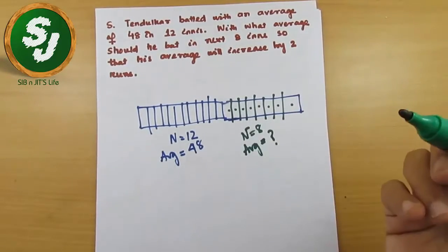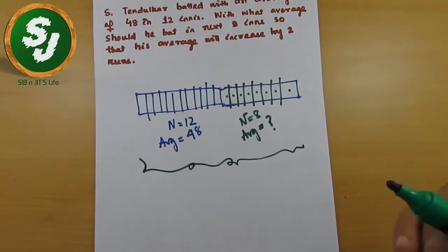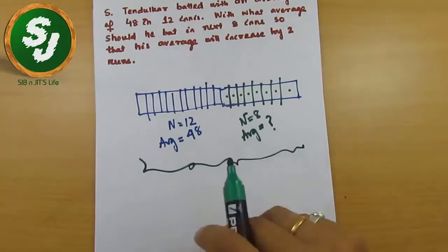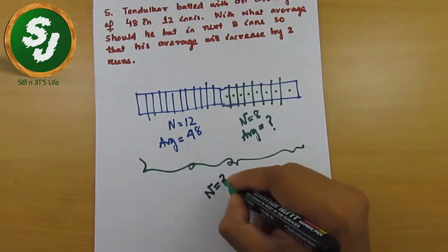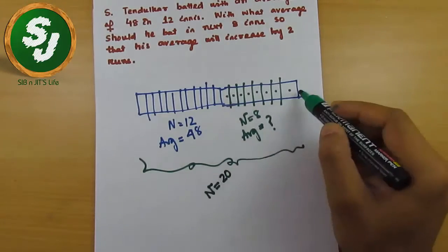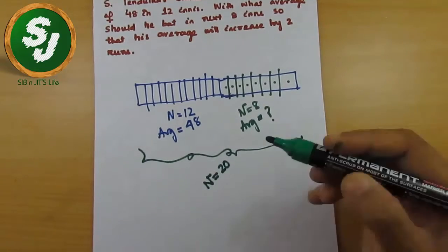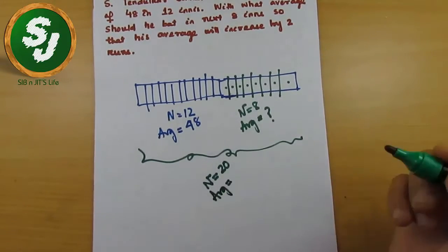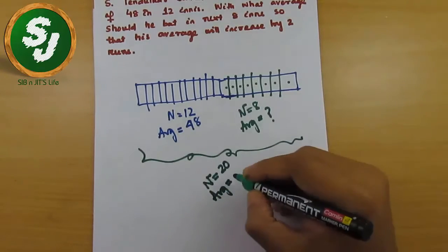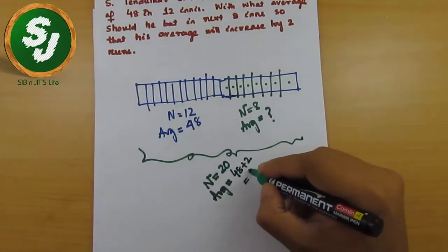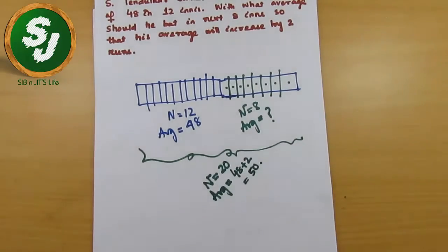So that his average will increase by 2 runs. His average means net average - all his 20 matches performance, N equals 20 here. After playing 8 matches, his total matches is 20 and his average will increase by 2 runs. His average was 48, it will increase by 2 runs, that means 48 plus 2 equals 50.